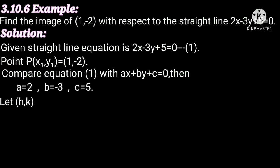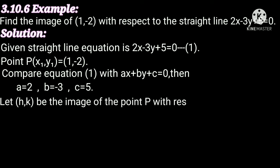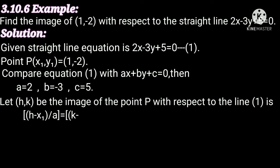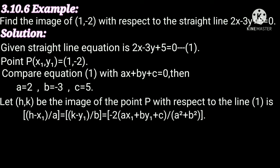Let (h, k) be the image of the point P with respect to line 1. Then the formula is: (h minus x₁) divided by a equals (k minus y₁) divided by b equals minus 2 into (ax₁ plus by₁ plus c) divided by (a² plus b²).